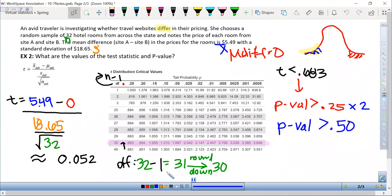So in this problem, our p value is going to be a number that is greater than 0.5. We're going to use that value on the next screen to determine our conclusion.